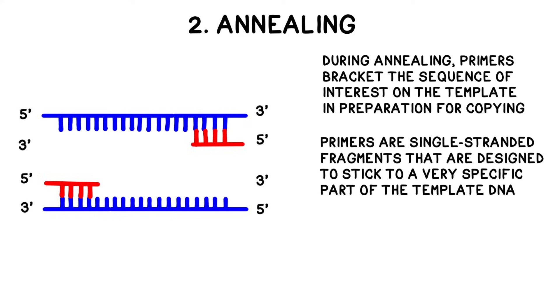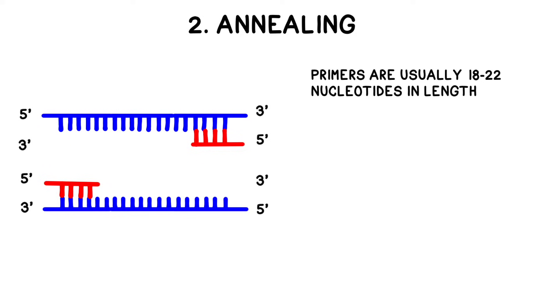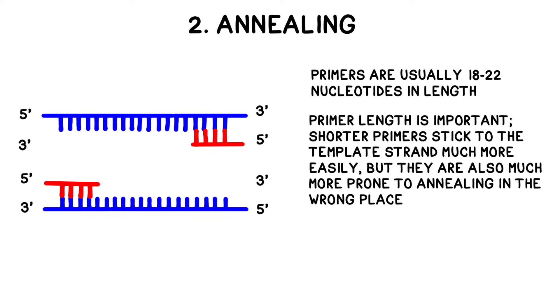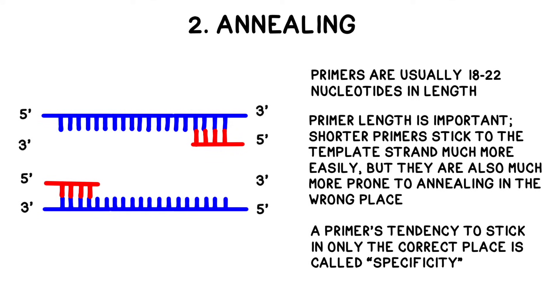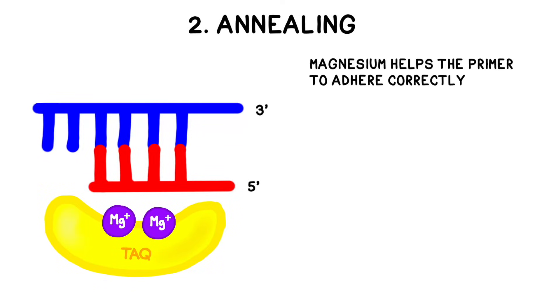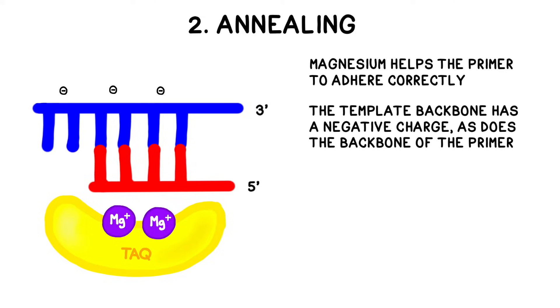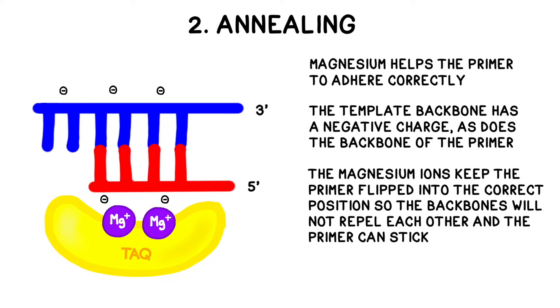Primers are single-stranded DNA fragments designed to stick to a very specific part of the sample. It's very important that the primers stick to the correct spot of the DNA sample, because that's the area that's going to be copied. Primers are usually 18 to 22 bases in length, with a maximum of about 30. However, finding the correct length is a balancing act — shorter primers easily stick to the template strand, but they are also much more prone to annealing in the wrong place. A primer's tendency to stick only in the correct place is called specificity. The annealing stage is where the magnesium first comes into play: the template strand has a negatively charged backbone, and the primers have a negatively charged backbone — these would usually repel each other, preventing the primer from sticking. The positively charged magnesium ions keep the primer in the correct orientation so it can more easily bind to the correct site.